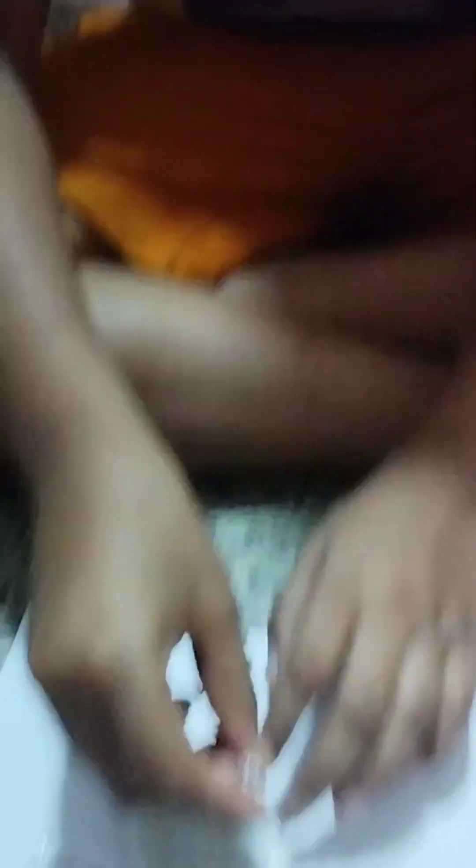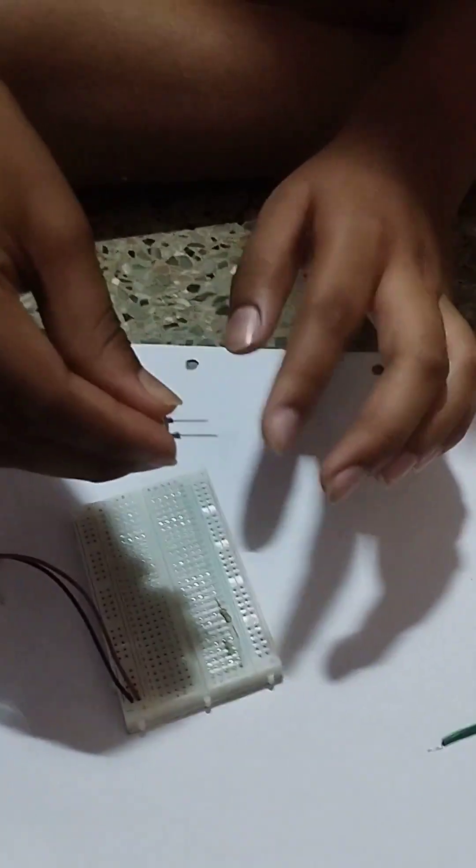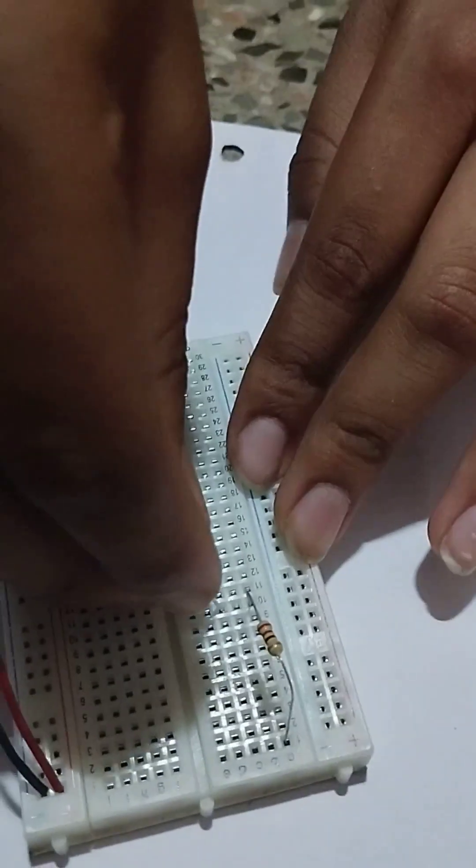First I will show you the series connection. So I connect this positive to the 10th row in the C column.